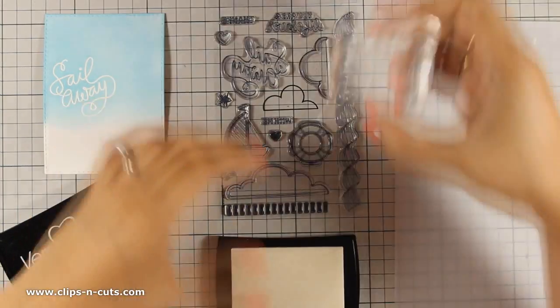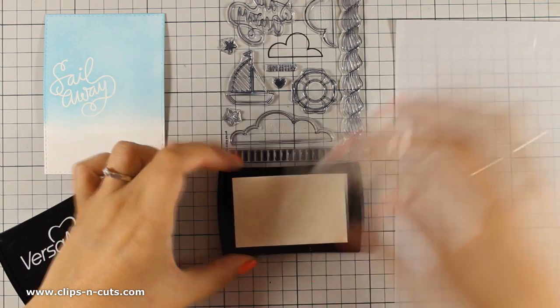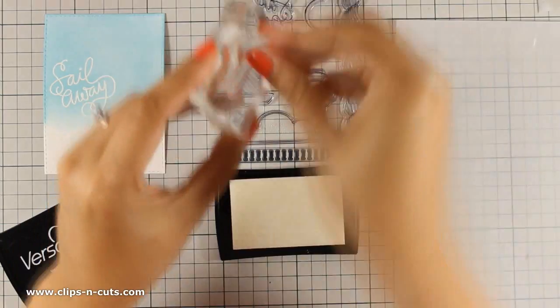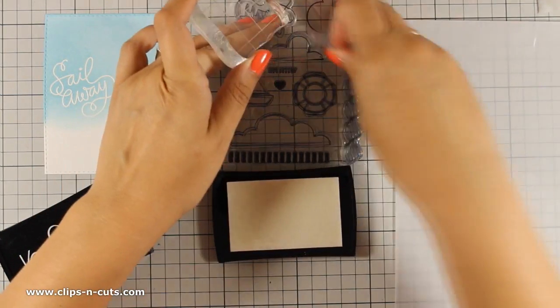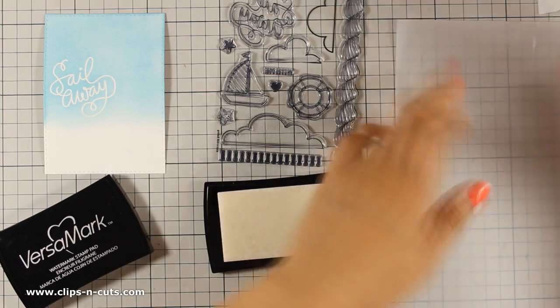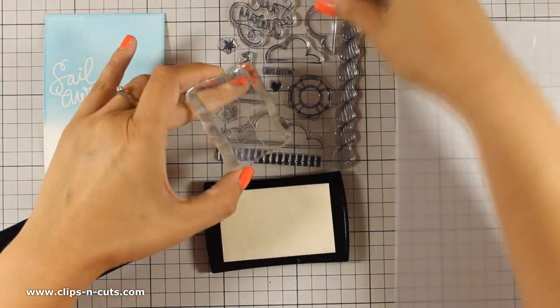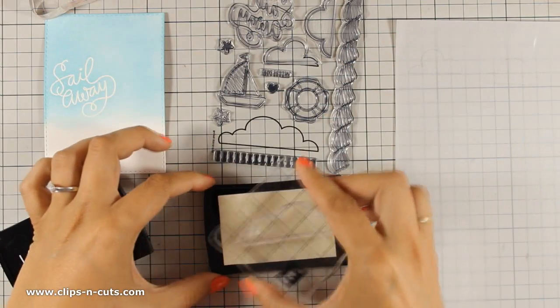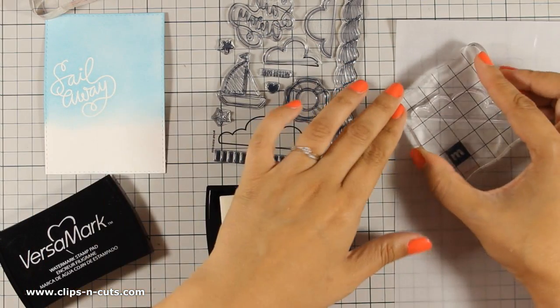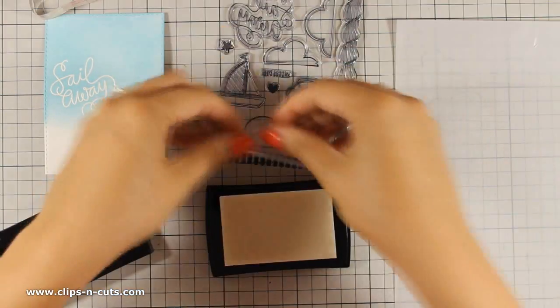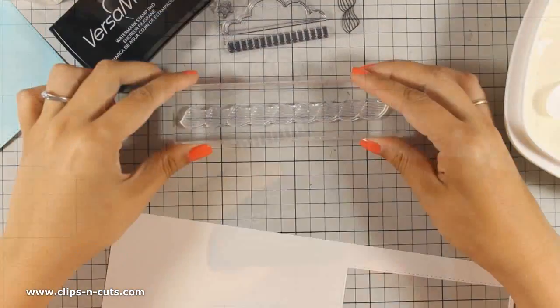Now I have gone ahead and stamped the three clouds from the kit and I am using VersaMark again and this time I am stamping them on a piece of vellum. I did stamp all three of the clouds but you will see later on my card that I am going to use only two of them so I am going to apply my embossing tool there and heat set them.